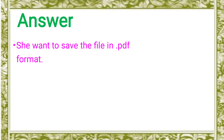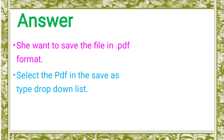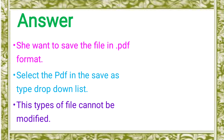She wants to save the file in .pdf format. So if you want to save in PDF file format, you can save it in PDF file format and you can change the file format. Select the PDF in the Save As type drop-down list. In the drop-down list options, select the PDF option from the Save As type format. These types of files cannot be modified. So the reason to use PDF file format is that by selecting the PDF option in the Save As type drop-down list, the PDF file format cannot be modified.